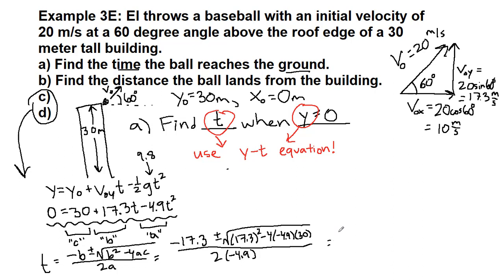To clean things up a bit: negative 17.3 plus or minus, the whole bottom is negative 9.8. I am going to plug all of this into my calculator: 17.3 squared minus 4 times negative 4.9 times 30, and take the square root of all of that. In that area we get 29.8.